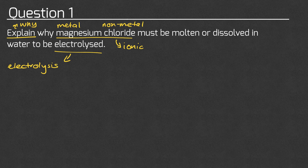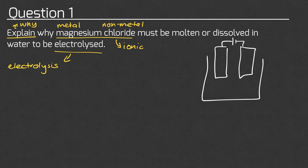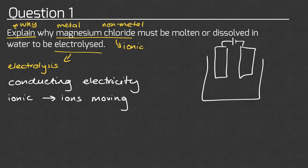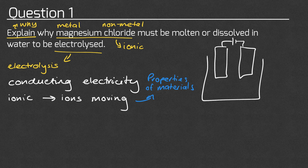We're going to draw a quick diagram of electrolysis to remind ourselves what we're looking at. We've got two electrodes connected to some kind of power supply, and electrolysis involves the flow of a charge. We know we're looking at ionic compounds, and the question mentions molten or dissolved. Ionic compounds can't conduct electricity when solid because the ions are in fixed positions and not able to move. But when molten or dissolved, the ions are free to move, so they can carry a charge throughout the structure.